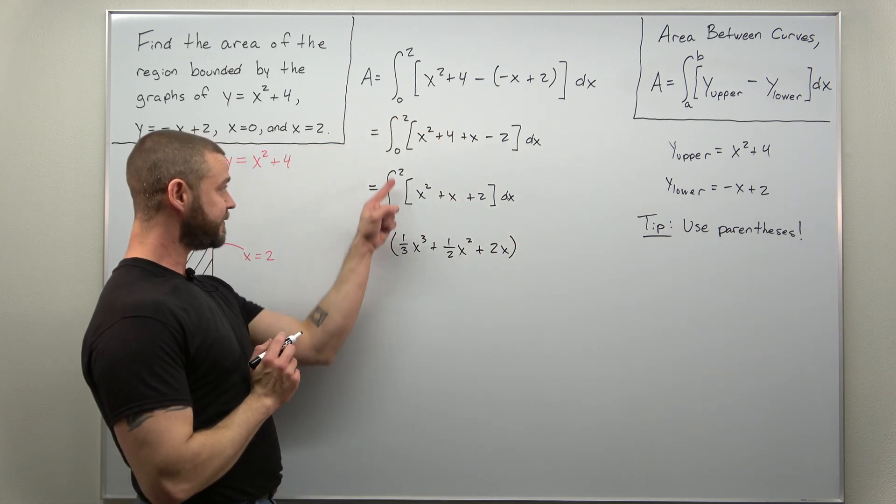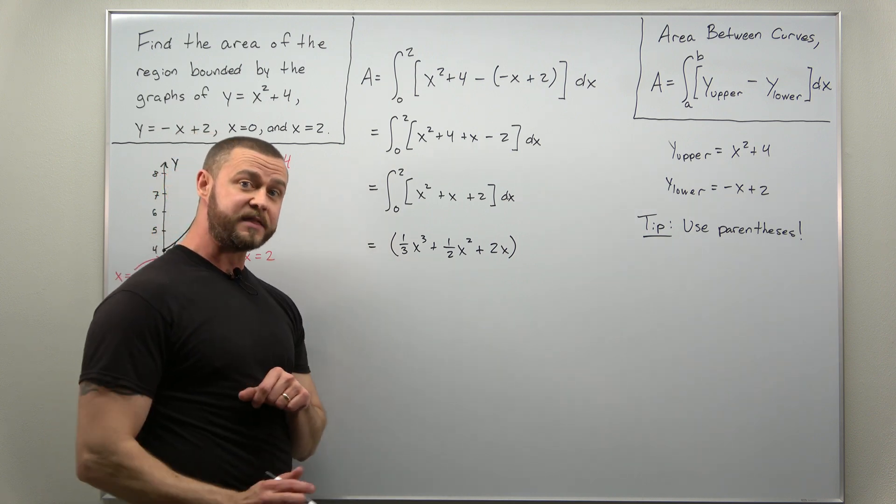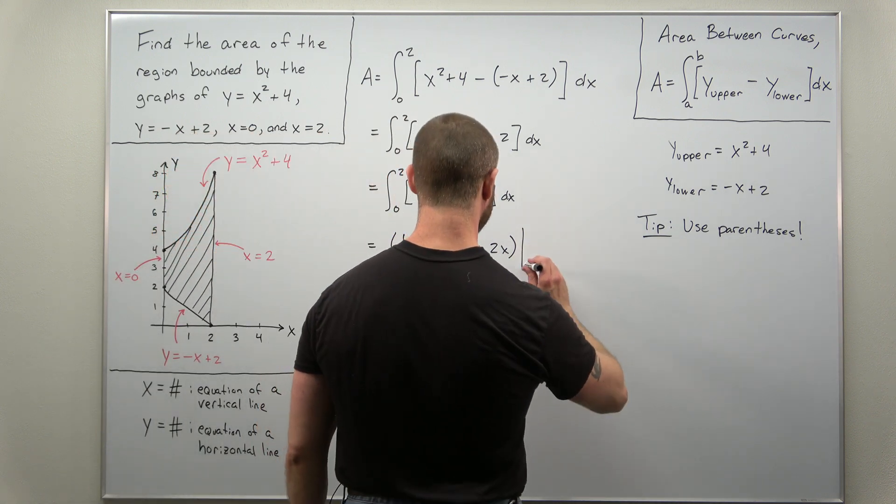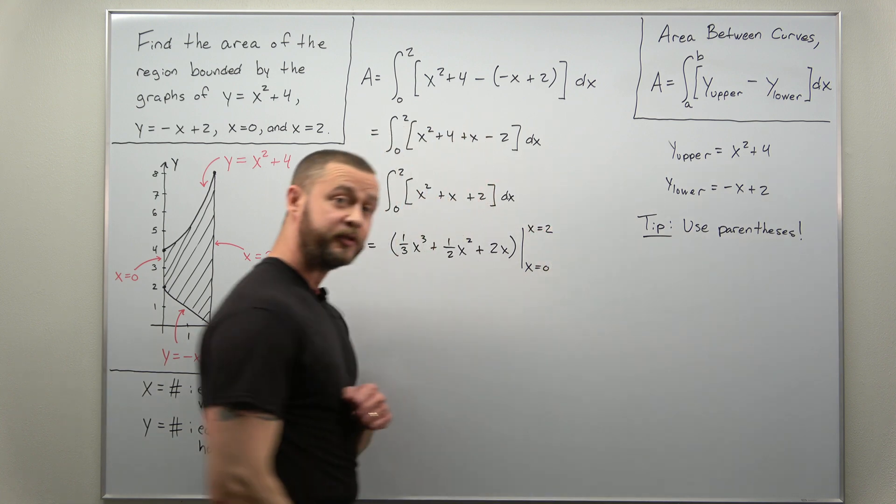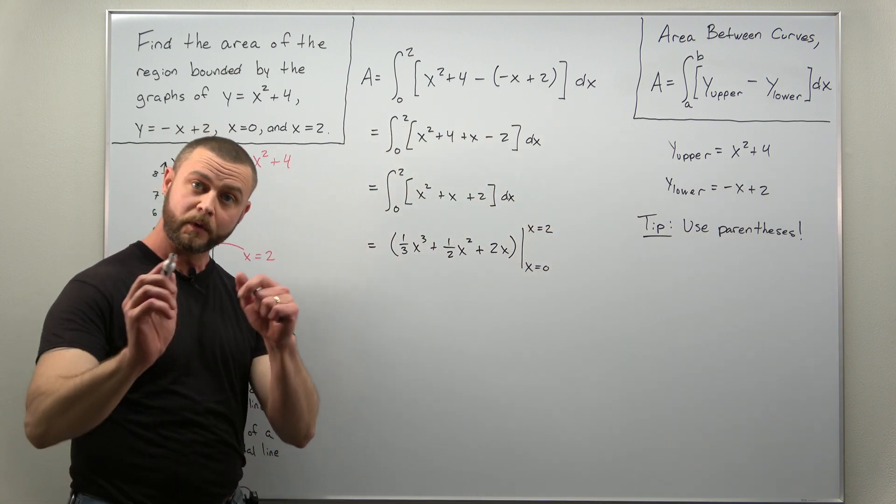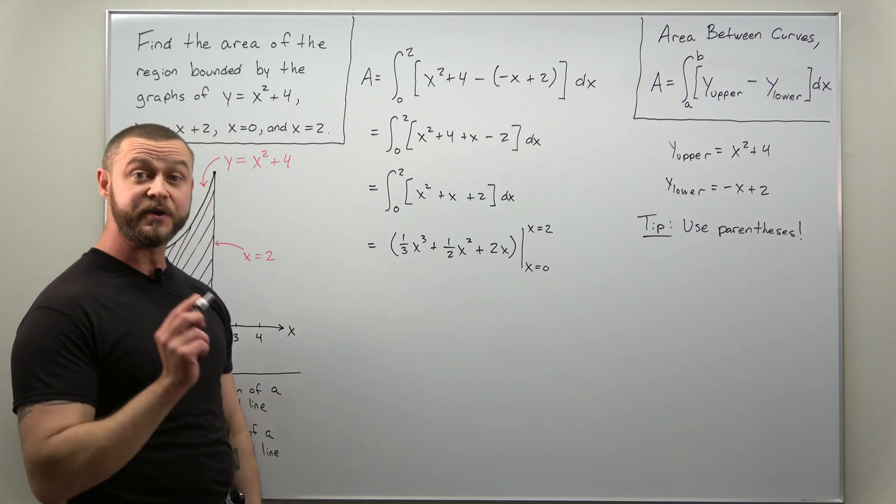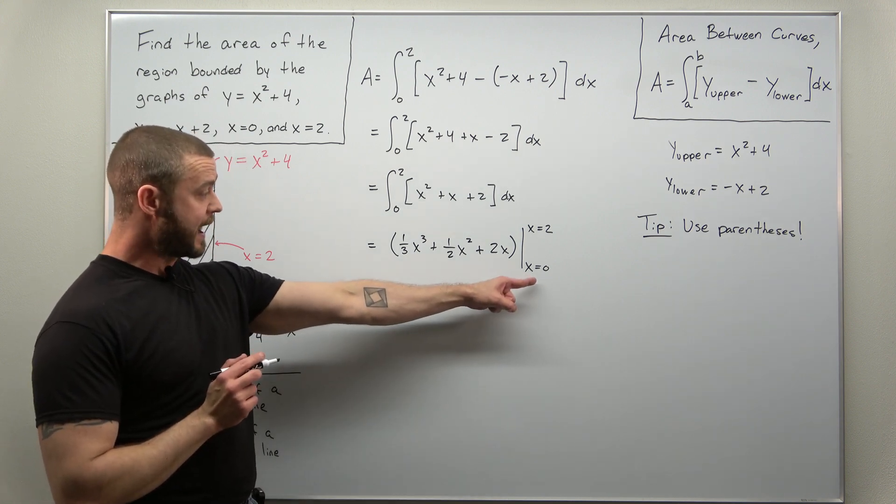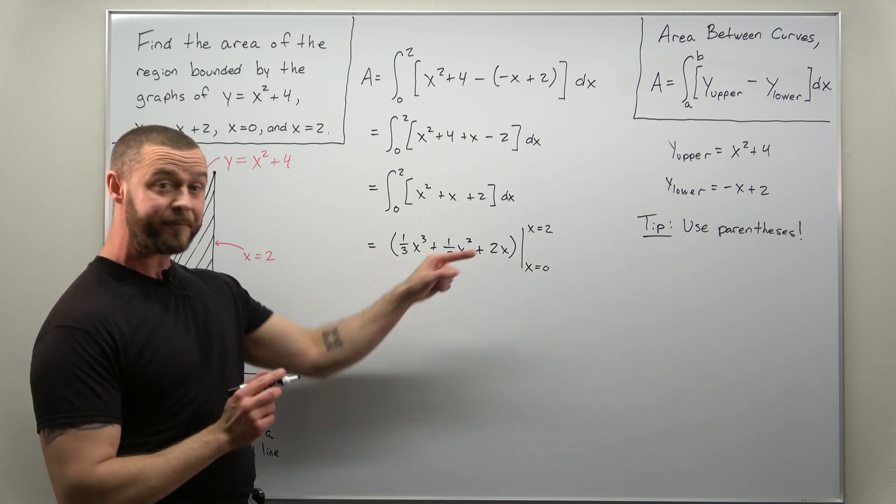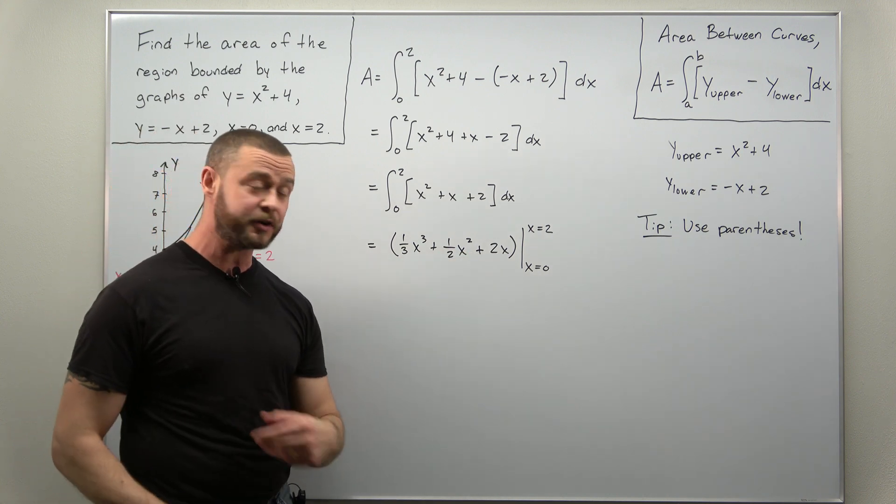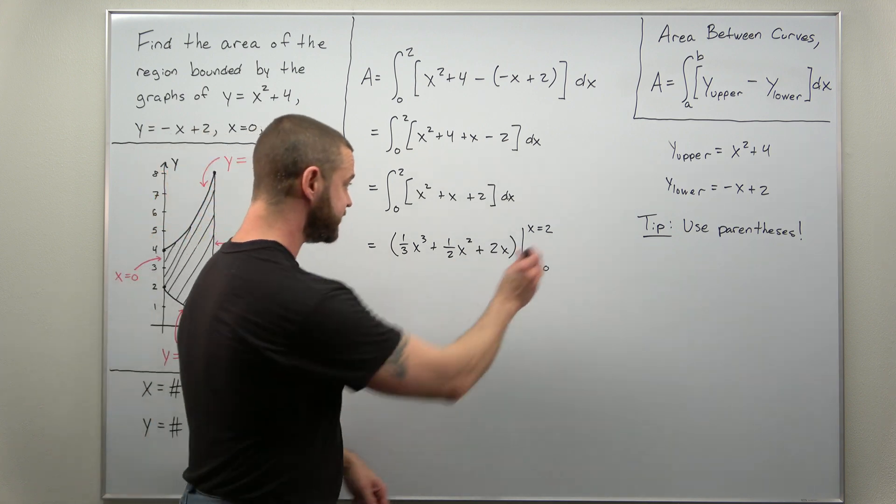And then your constant 2, the antiderivative for that is the constant 2 times x. So finally here plus 2x. And since we had a definite integral we evaluate that using the fundamental theorem of calculus from 0 to 2. The nice thing about the region here, the lower bound or lower limit is 0, and when you plug x equals 0 into that the whole thing evaluates to 0, so the only part that remains is when we plug in x equals 2.